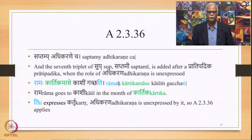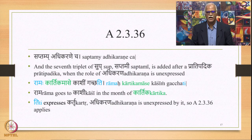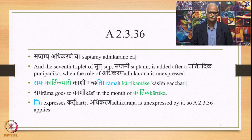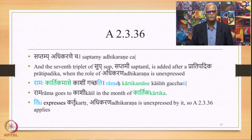We have 'Saptamya dhikaranecha,' Sutra 2.3.36, expressing the Adhikarana Karaka. The seventh triplet Saptami is added after a Pratipatika when the role of Adhikarana is unexpressed — Anabhihite. Example: 'Ramah kartika maase kashim gachati' — Rama goes to Kashi in the month of Kartika. Ti expresses Karthu; Adhikarana is unexpressed by it. So 2.3.36 applies and we add Saptami — the seventh Sub-triplet — after Kartika Maase, making it Kartika Maase. Rama is the Kartha whose role is expressed by Ti, therefore it takes Prathama.